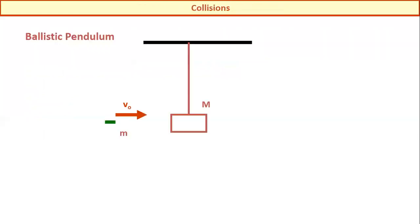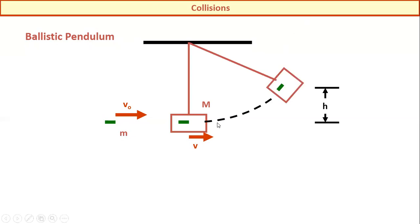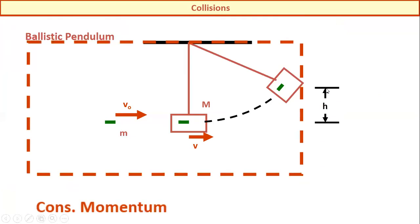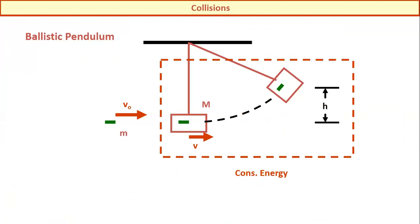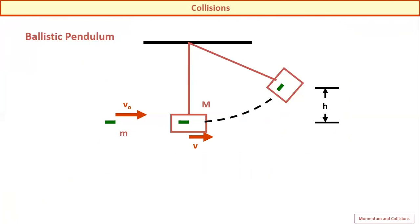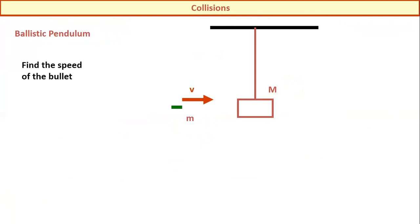This is homework for you. We are going to discuss another problem related to collision — the ballistic pendulum. The mass of the pendulum is M (capital) and a body of mass m (small) has initial velocity v₀. If it strikes the heavy object M, the system gets final velocity V and moves upward, reaching a height h.